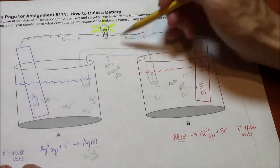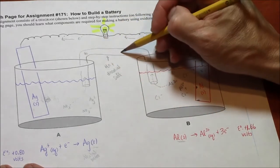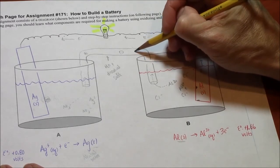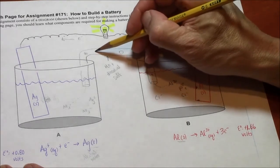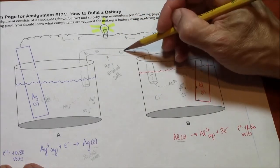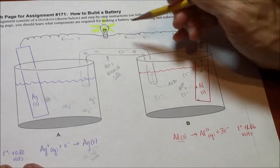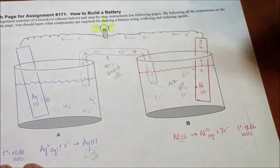So within the salt bridge, there will be positive and negative ions. I won't specify what they are, but they can also migrate to help. So the negative ions will migrate in this direction, where they are wanted. The positive ions will migrate in this direction, where they are wanted or needed.